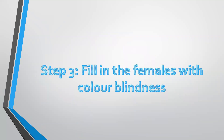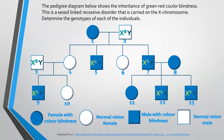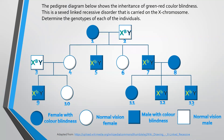The next step: we fill in the other information we know for sure — the females with colorblindness. We know they have to be homozygous recessive. So number one has to have two alleles for colorblindness, as well as number eight and number 11.